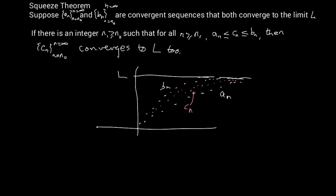That's what this theorem is saying: if you can find two sequences a_n and b_n that both converge to the same limit — and that's a very important part of the statement, they must both converge to the same limit L — then as long as at some point, this n₁ greater than n₀, c_n is between a_n and b_n from then on, c_n converges to L also.